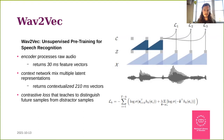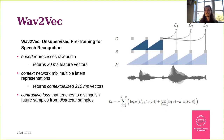Wave2Vec is a model introduced by Facebook AI Research in 2019. They used unsupervised pre-training for speech recognition: unlabeled data was used to pre-train a model, and the resulting pre-trained vectors were used as features instead of classical log-mel filterbank features.